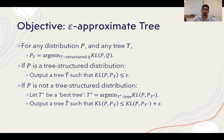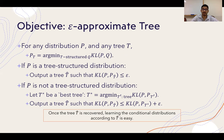On the other hand, if p is not a tree-structured distribution, let t* be the best tree for the unknown distribution p — the one achieving the minimum KL projection from p among all possible tree structures. Our goal is then to output a tree t-hat such that p's projection to t-hat is at most epsilon worse than the best possible projection. In both cases, we refer to t-hat as the epsilon-approximate tree for p. Once the tree t-hat is recovered, learning the conditional distributions according to t-hat is relatively easy; we skip that for this talk and focus only on structure learning.